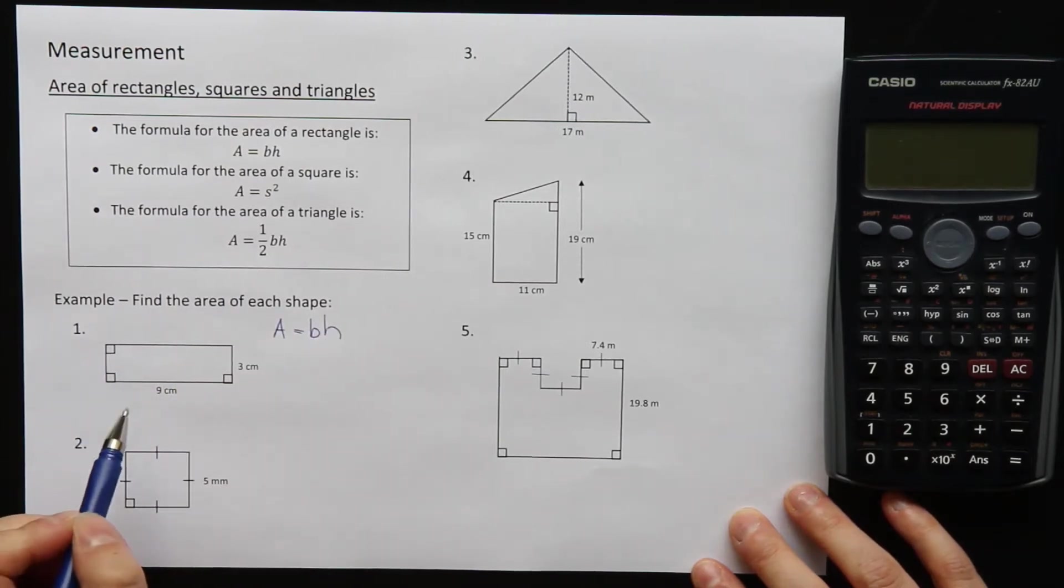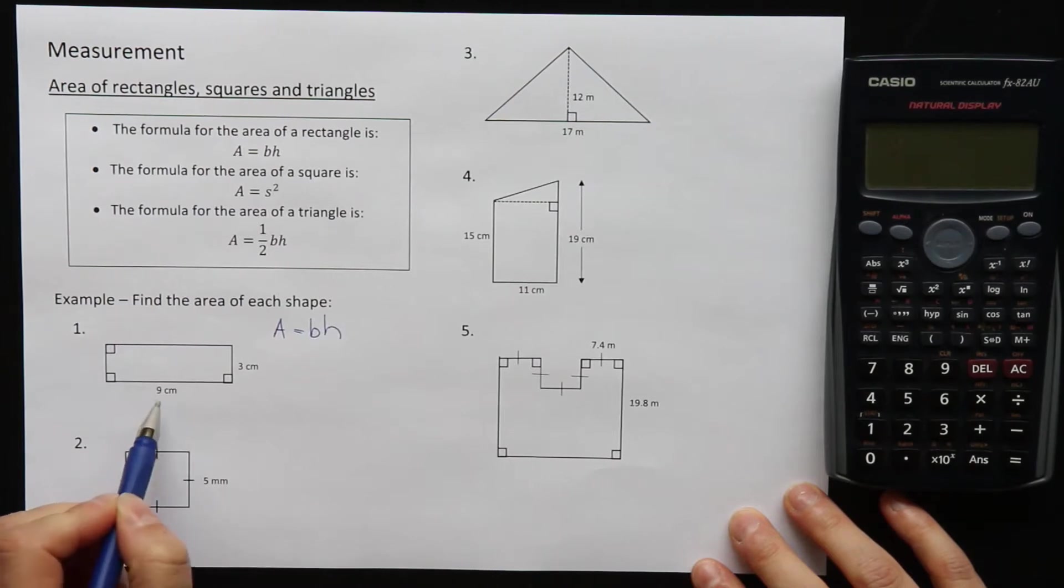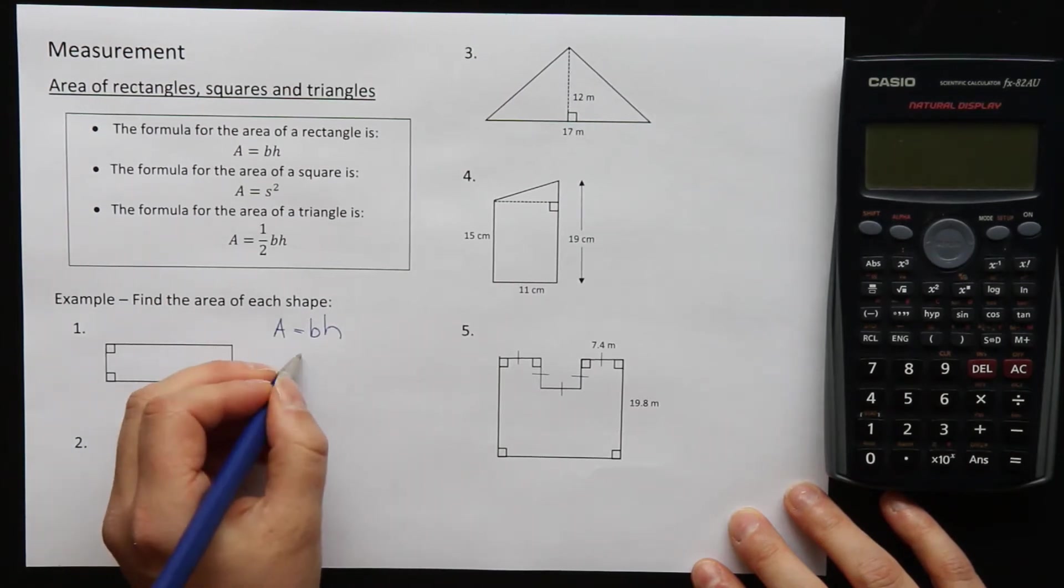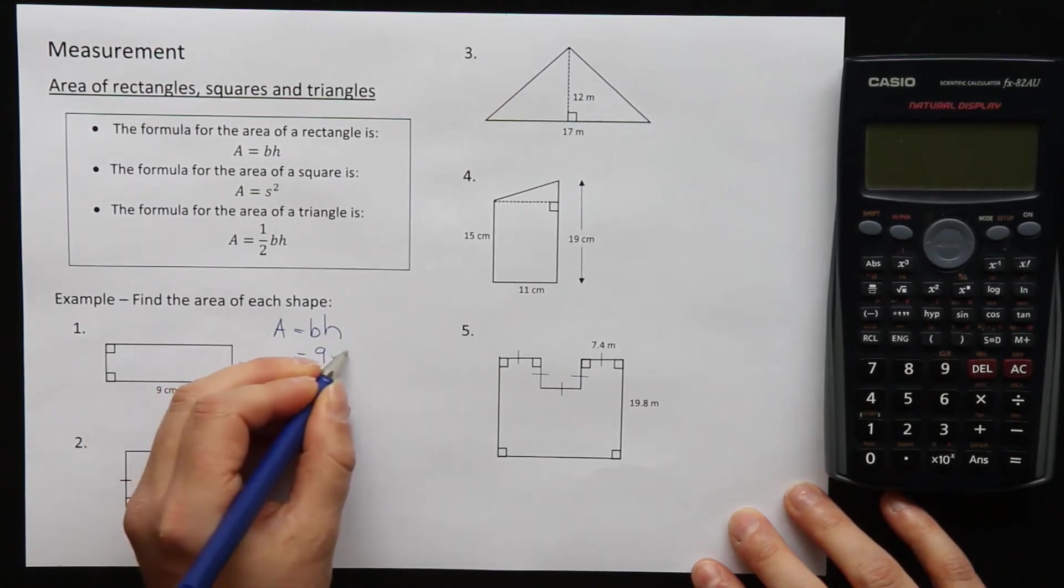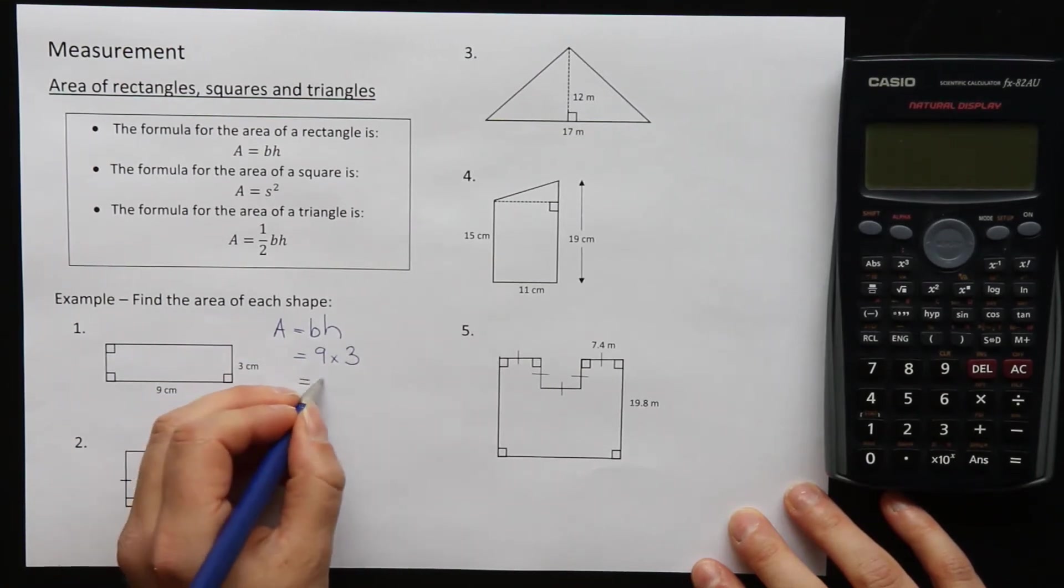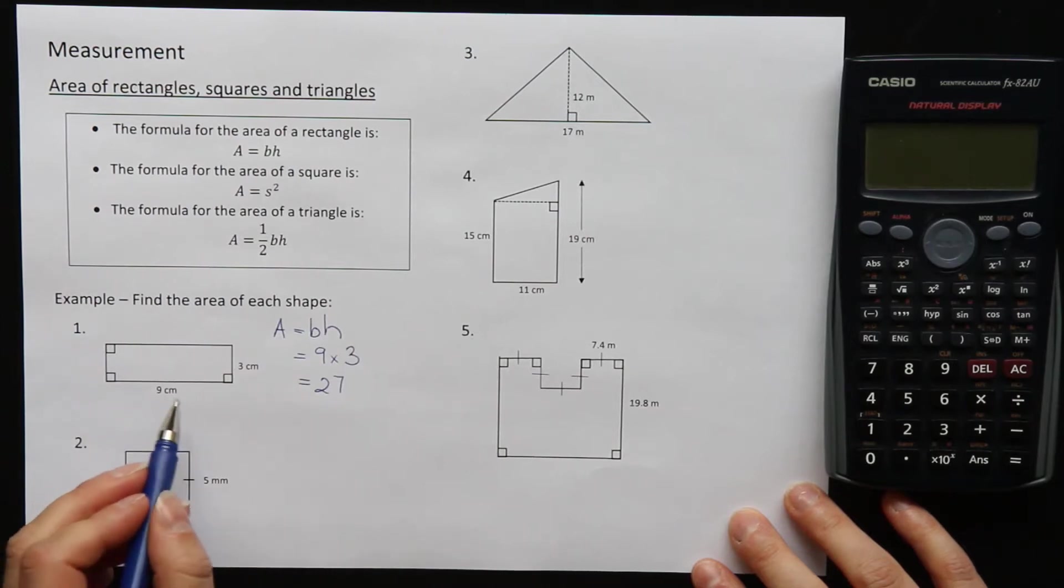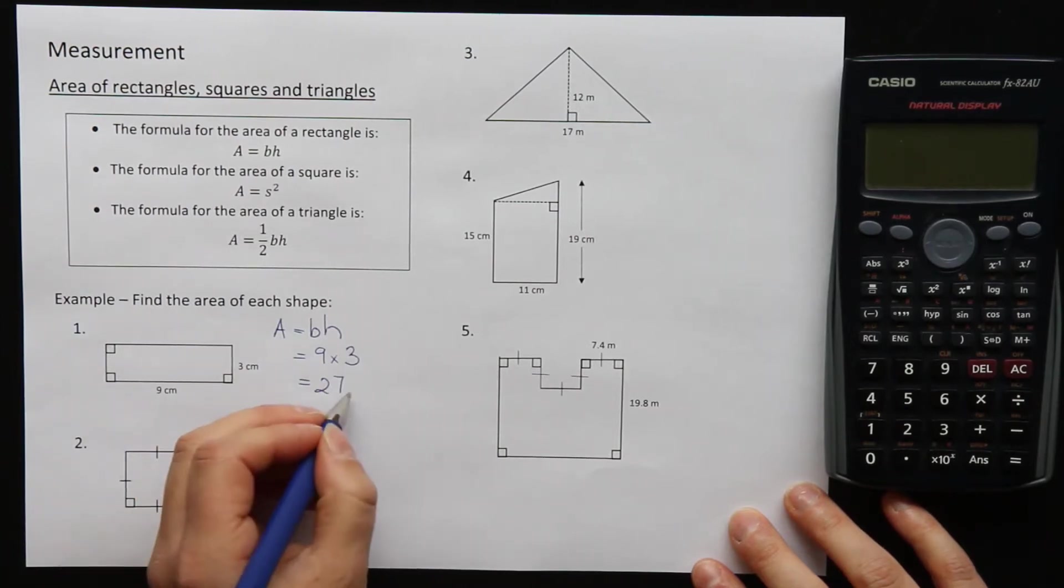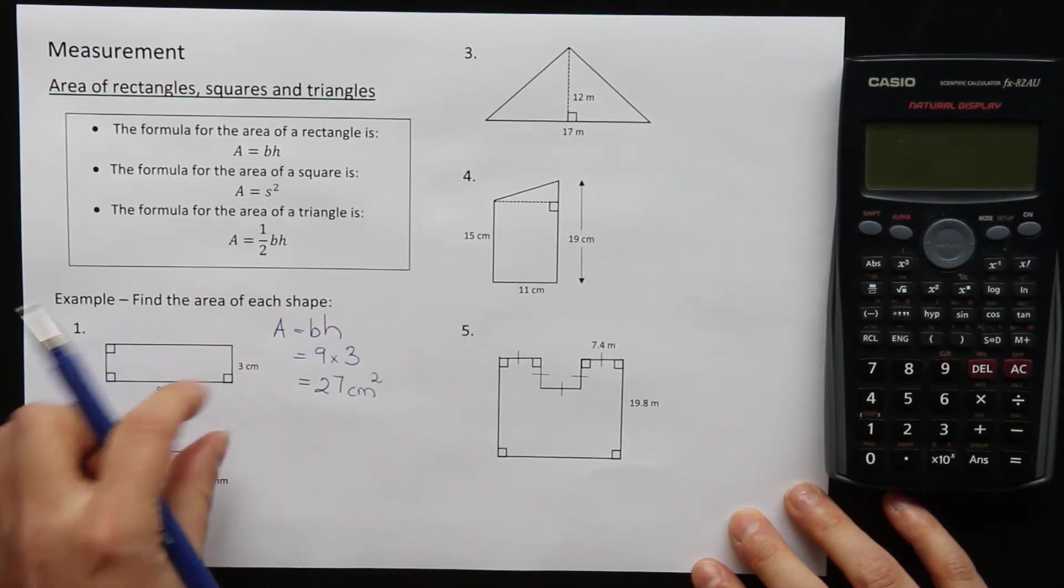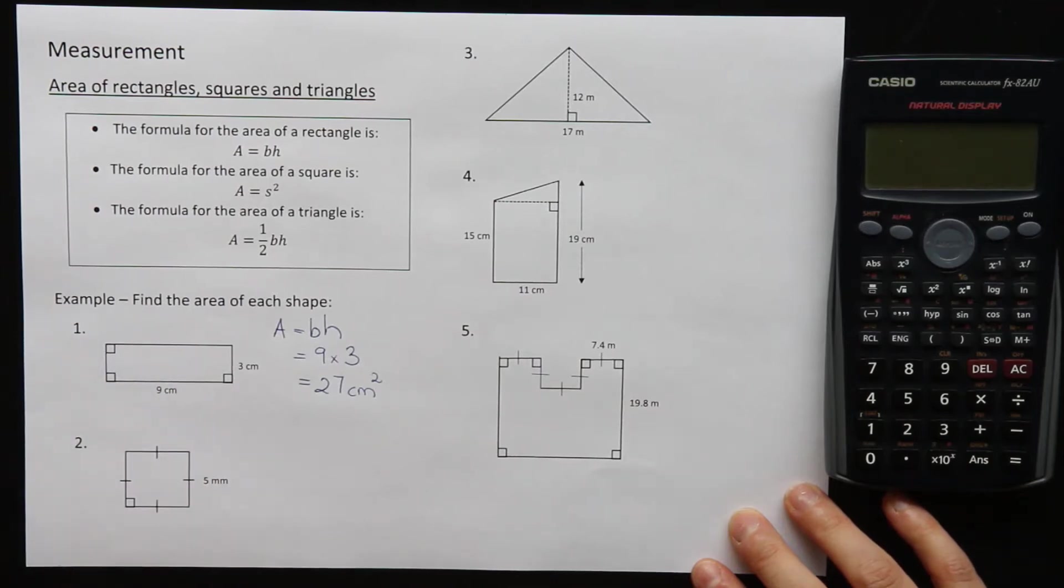The second step is to substitute in the numbers for the base and the height. The base is 9 and the height is 3, so A is equal to 9 times by 3. And 9 times 3 is 27. We must always include units. So the units this time are centimeters, but because we're doing area, they are centimeters squared because area is counting up all the little squares of area.